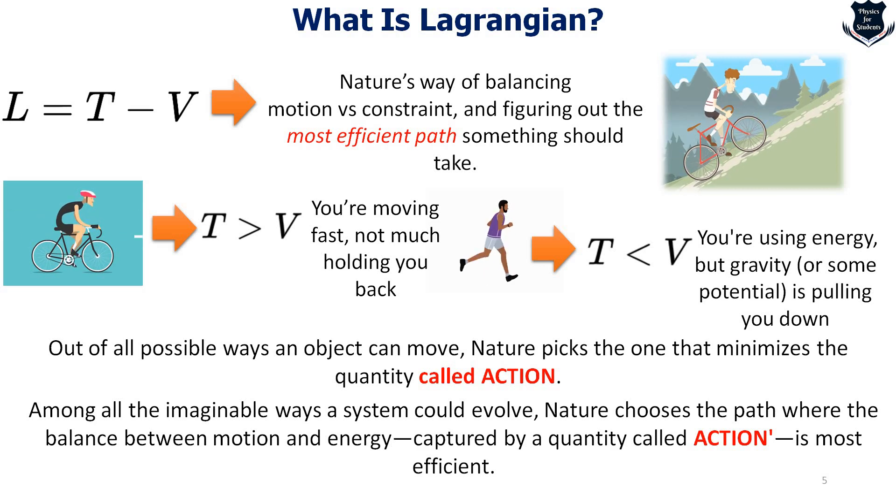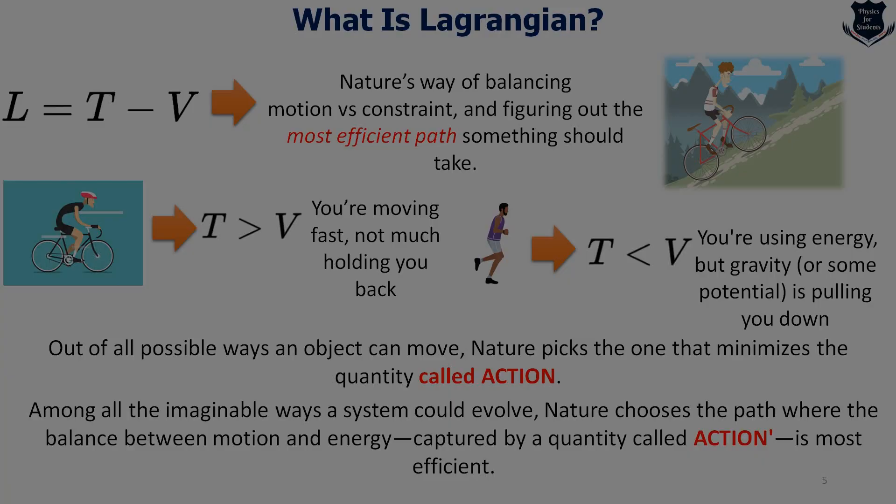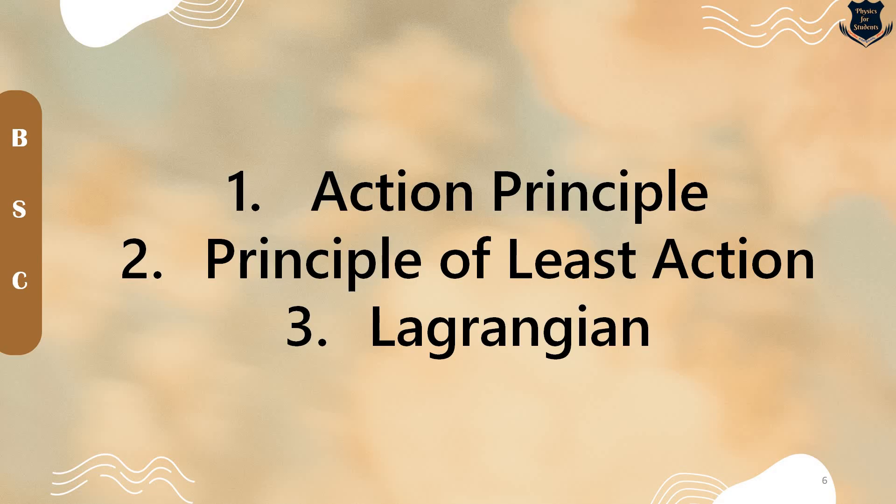From here there are three important concepts which emerge. One, what is the action. The second one is called principle of least action. And how those two factors actually relate finally to the Lagrangian.